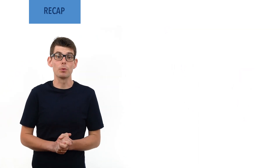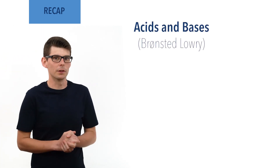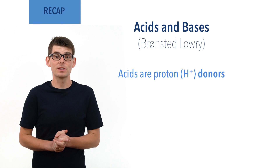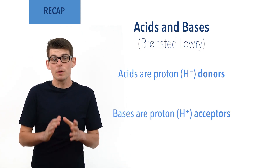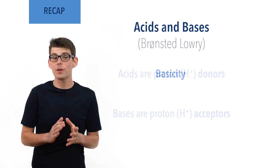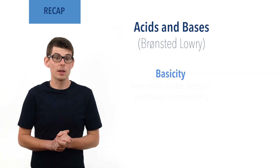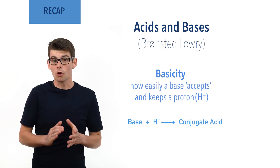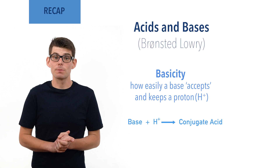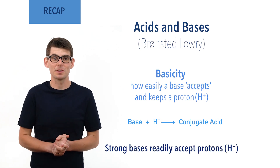According to the Bronsted-Lowry definition, acids are proton (H+ ion) donors, and bases are proton (H+ ion) acceptors. The basicity of a base refers to how easily and readily it accepts a H+ ion and remains as a conjugate acid. Strong bases readily accept H+ ions, and weaker bases less readily accept H+ ions.